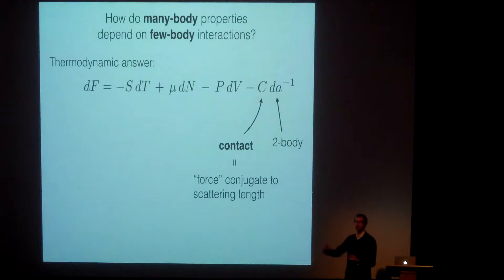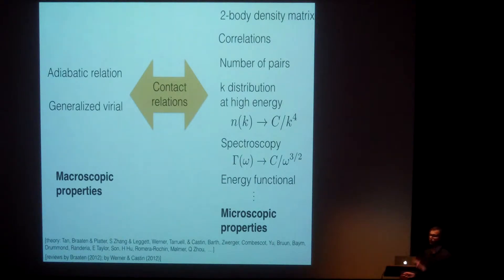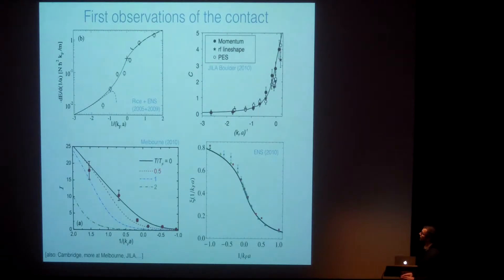So, at first you might think there's nothing special. Every external knob has a conjugate variable. But the contact is at the center of a set of universal relations, which not only are contained in thermodynamics, but also have a lot of microscopic implications. So if you know what this one value is, the contact, you can say something about the two-body density matrix, about correlations, about how many pairs there are in the gas. You can see the contact in momentum distributions and in spectroscopy. So the tie between these microscopic and macroscopic properties is something that isn't available for pressure or other thermodynamic variables. And here are some first observations of the contact in four different labs around the world.